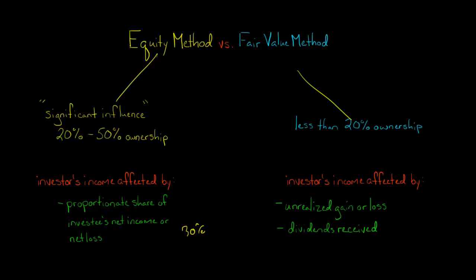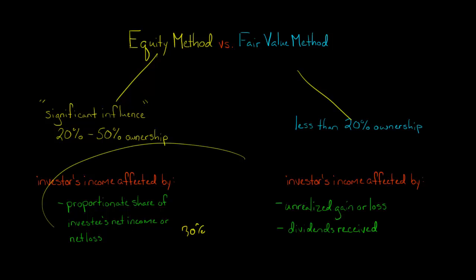Under either of these methods — equity method or fair value method — if the company actually sells the investment and has a realized gain or loss, that would affect the income of the investor. Also, in either case, an asset could be impaired, and an asset impairment would decrease the profit of the investor. Those are the commonalities; here we're focusing on the differences.